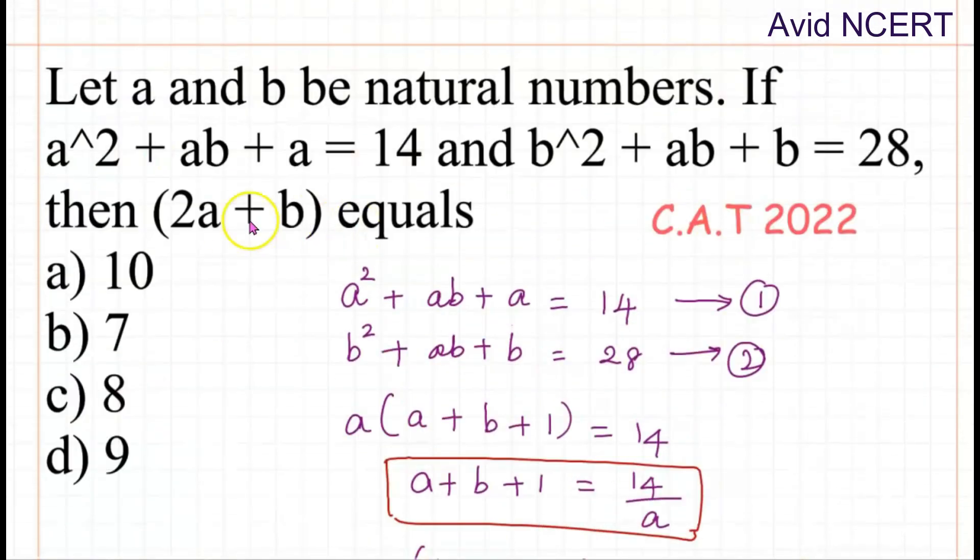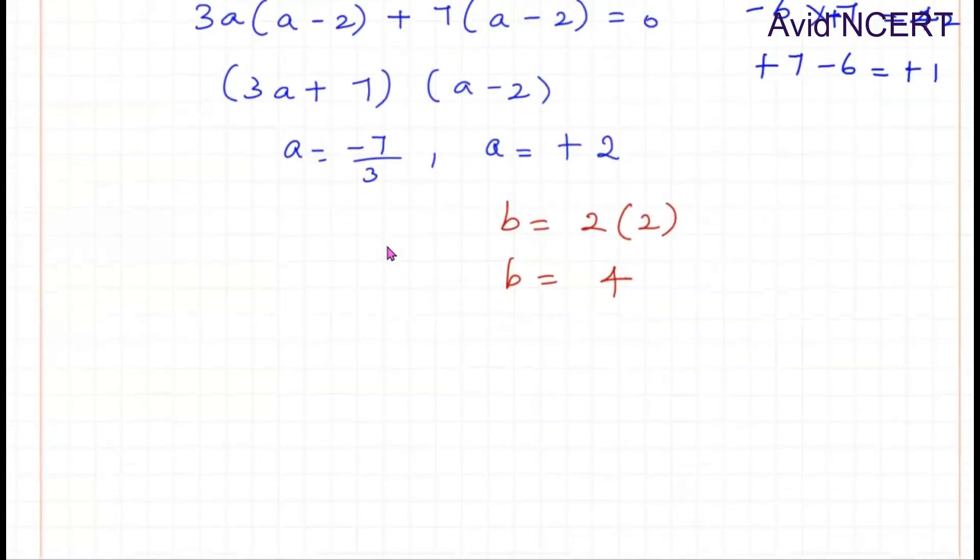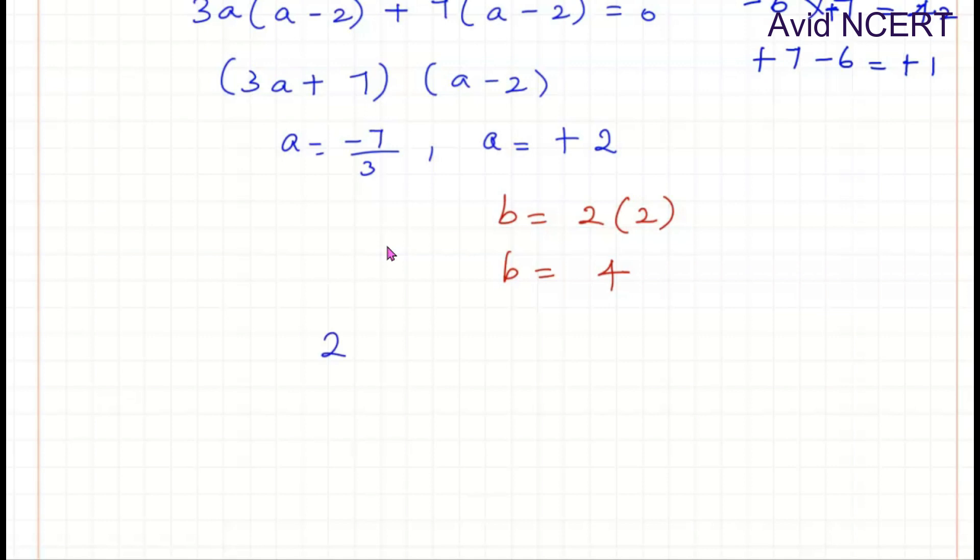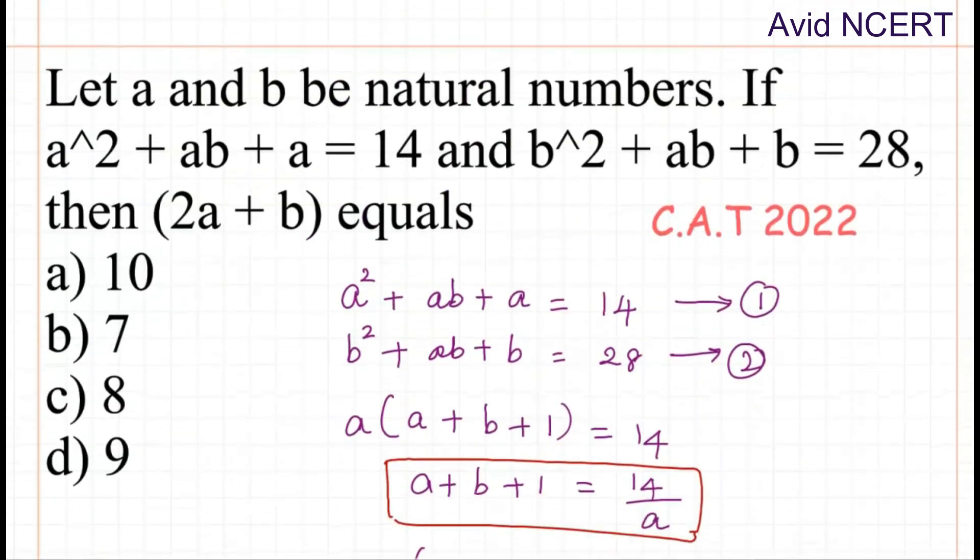Now the question is find the value of 2A + B. Substituting those values, 2A + B equals 2(2) + 4, which equals 4 + 4 equals 8. So the value of 2A + B is 8.